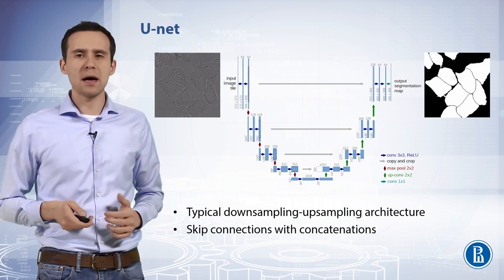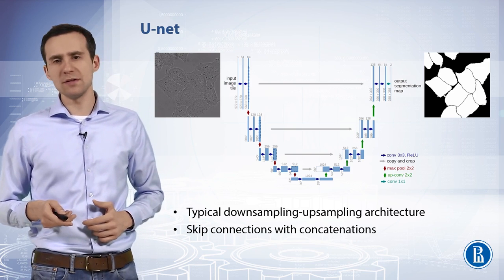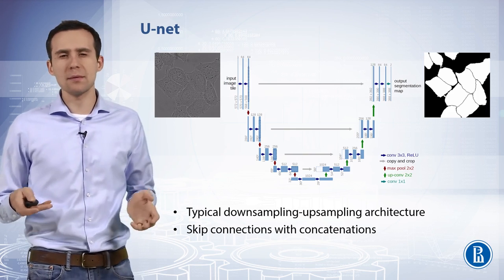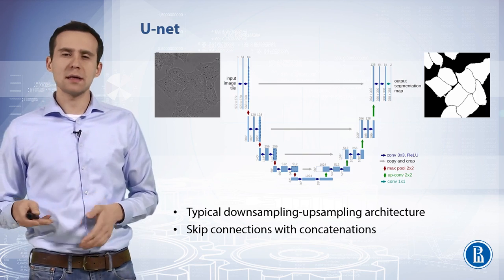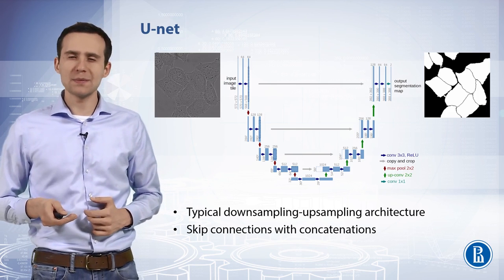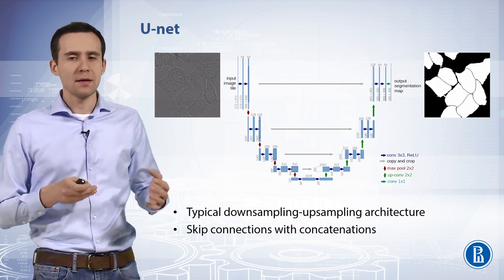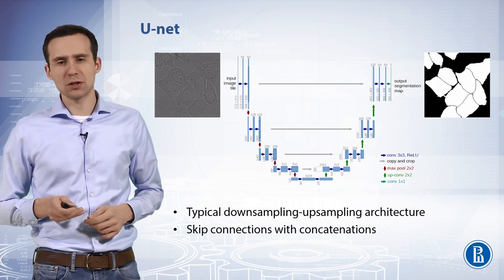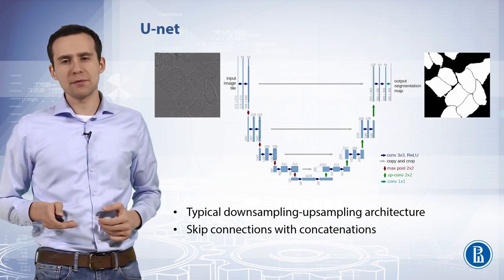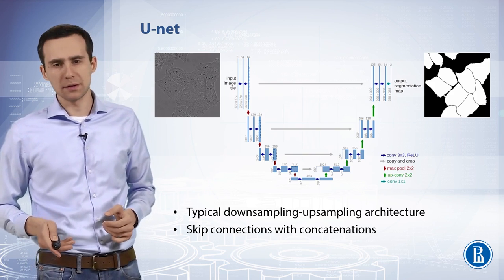Every step in the upsampling part consists of a transposed convolution of the feature map, followed by a 2×2 convolution that halves the number of feature channels and upsamples the data, and a concatenation with the correspondingly cropped feature map from the downsampling part — implemented via skip connections. This is then convolved by two 3×3 convolutional layers, each followed by a rectified linear unit.